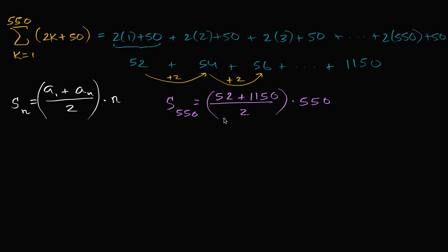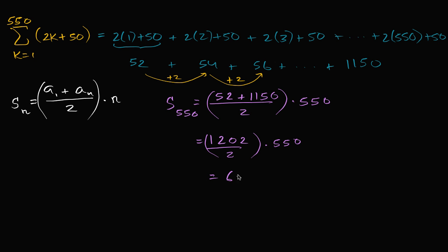So what is this going to be? Let me simplify. Adding 52 and 1150 gives us 1202, so this is going to be 1202 over two, times 550. Now, 1202 divided by two is going to be 601. So this is equal to 601 times 550.